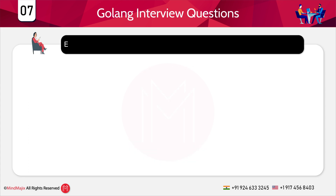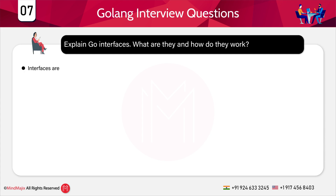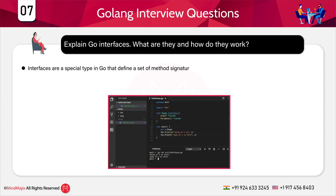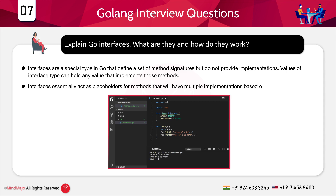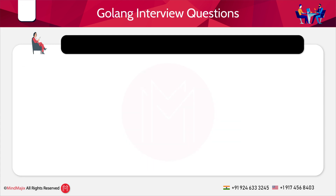Explain Go interfaces — what are they and how do they work? Interfaces are a special type in Go that define a set of method signatures but do not provide implementation. Values of interface type can hold any values that implement those methods. Interfaces essentially act as placeholders for methods that will have multiple implementations based on what object is using them.